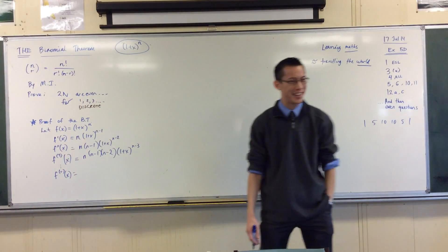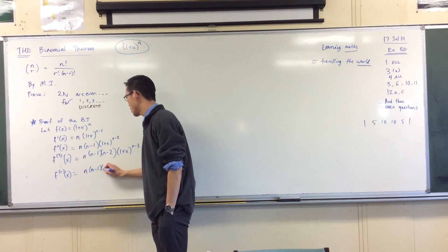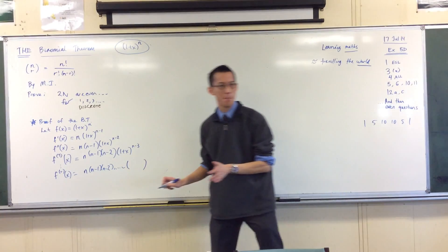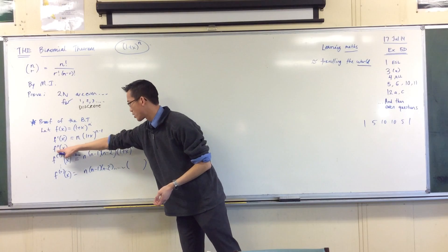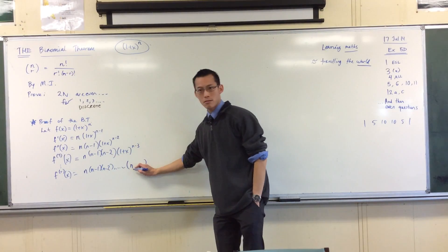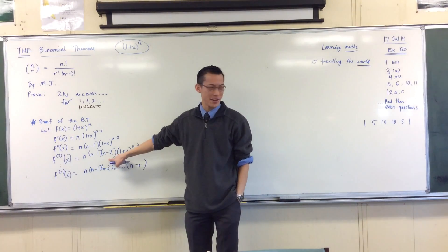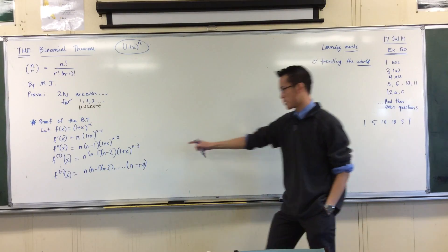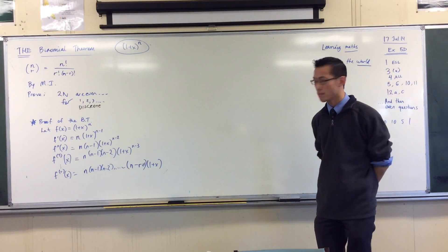What would the r-th derivative be? I've differentiated r times, so I get n, then n minus 1, then n minus 2, multiplying some number of times. When I differentiated once I ended at n; twice, I ended at n minus 1; three times, n minus 2 — so each time I'm off by 1 and have to add 1 to compensate. The last factor is n minus r plus 1. The remaining x term gives (1 + x) to the power of n minus r.